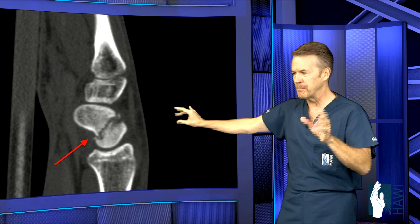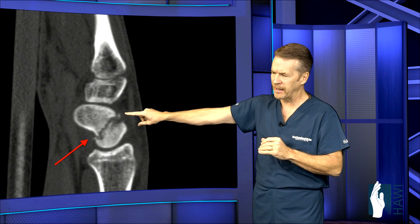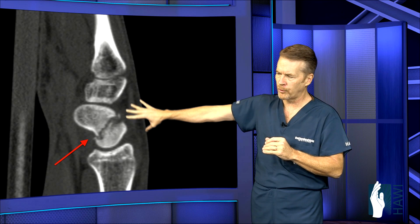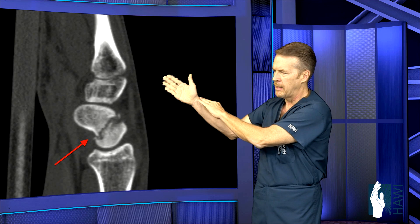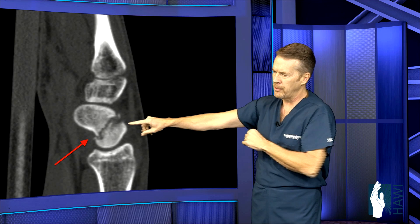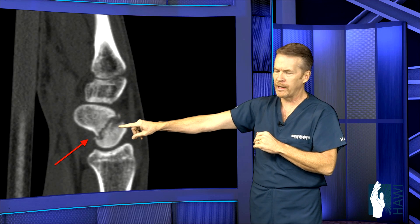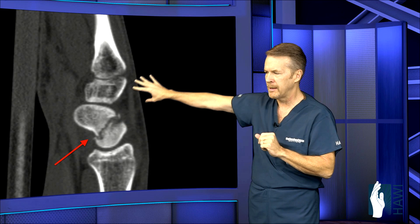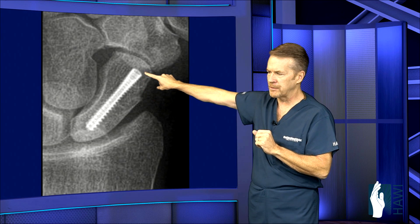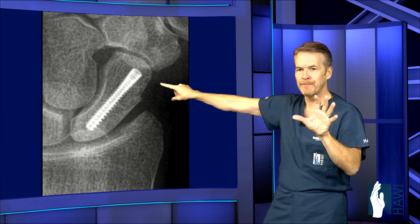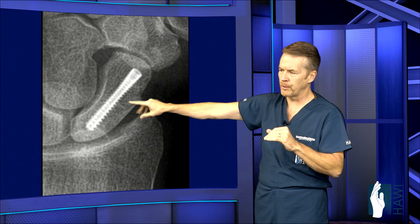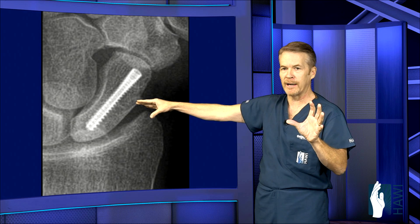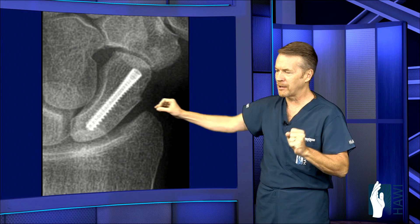Let's look at an actual human being. This is a CAT scan showing the arrows pointing on the palm side — this is the dorsal or back side — and you can see a crack going through the waist or middle portion of the scaphoid. How did we fix this? We put a screw in. This is the actual patient about six weeks later — everything's healed, you can see the screw in, no more crack is visible, and this patient is getting back to normal activities very quickly.